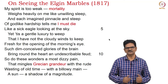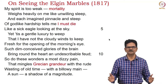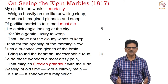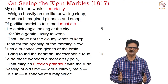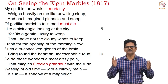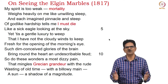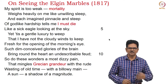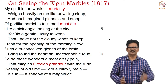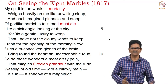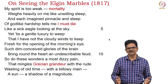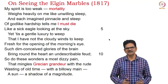Here is the sonnet 'On Seeing the Elgin Marbles,' written in 1817: 'My spirit is too weak — mortality weighs heavily on me, like unwilling sleep, and each imagined pinnacle and steep of godlike hardship tells me I must die, like a sick eagle looking at the sky. Yet 'tis a gentle luxury to weep, that I have not the cloudy winds to keep fresh for the opening of the morning's eye. Such dim-conceived glories of the brain bring round the heart an undescribable feud; so do these wonders — a most dizzy pain — that mingles Grecian grandeur with the rude wasting of old time, with billowy main, a sun, a shadow of a magnitude.' This magnitude, this grandeur, Keats saw in Grecian art.